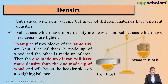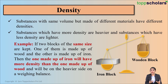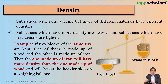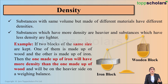Here, as you can see, I have two blocks of the same size — one made of wood and the other made of iron. These two blocks occupy the same volume but are made of two different substances. Iron is heavier and denser than wood. So the iron block, having more density, will be on the heavier side of the weighing balance, while the wooden block, which has less density, will be on the lighter side. So it is not necessary that materials with the same size and volume will have the same density.